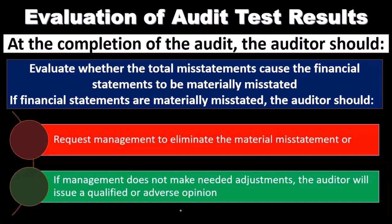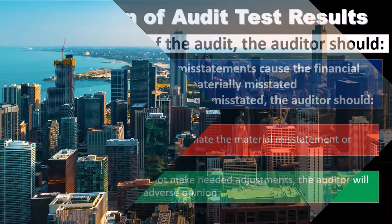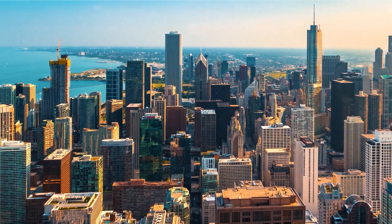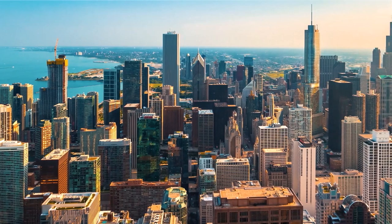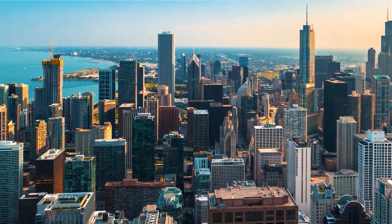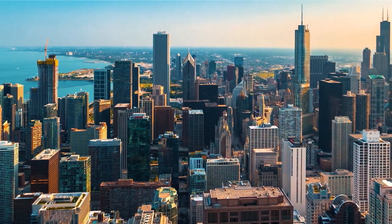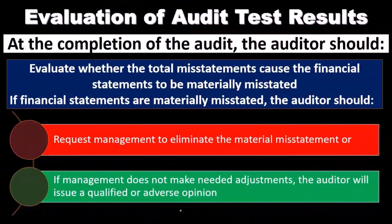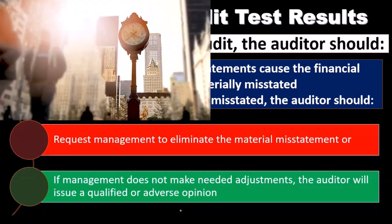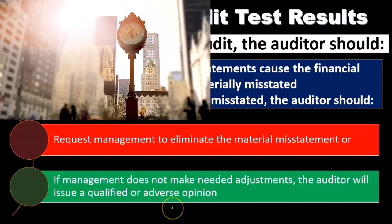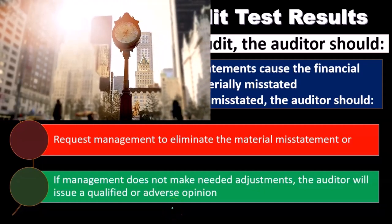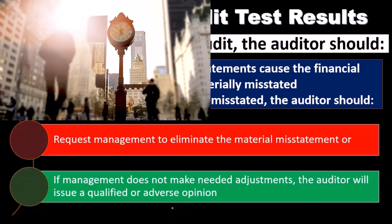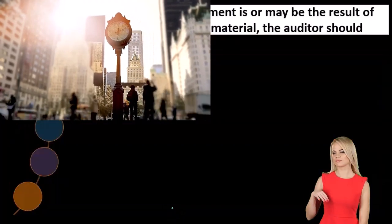If there's no agreement on the financials or on the action that management should take to correct the financial statements, we might have to disengage from the engagement. If it comes down to giving an adverse opinion or disengaging, oftentimes it ends up in a disengagement at that point in time.